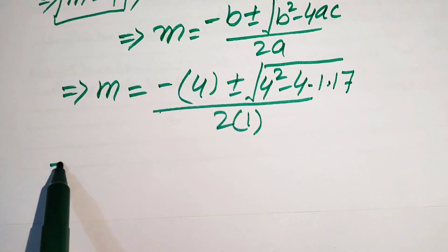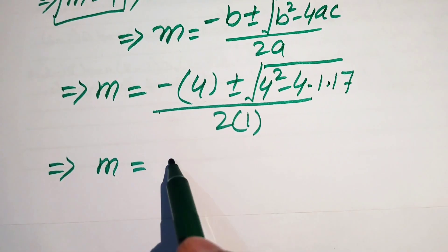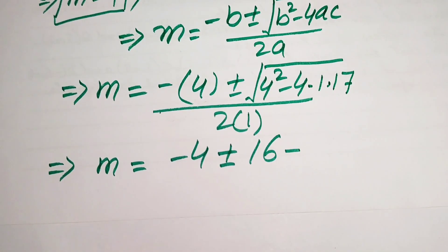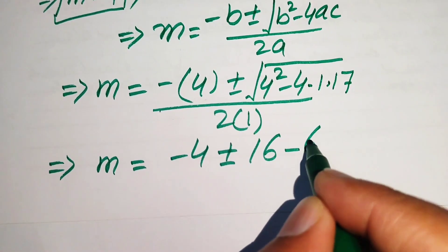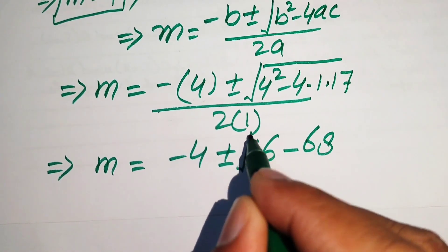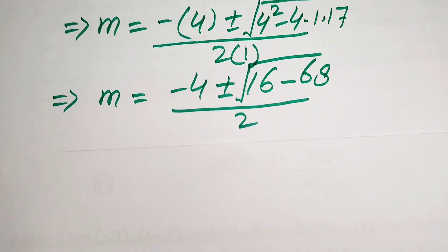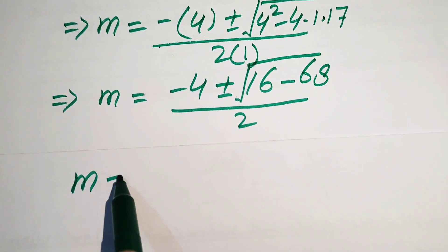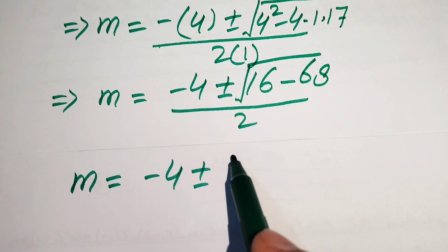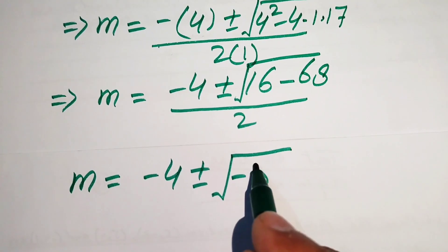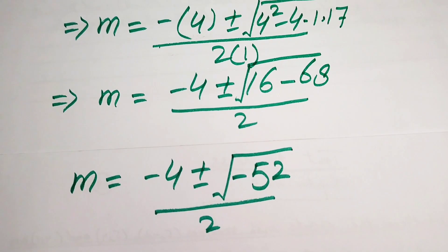Simplifying inside the square root: 4² = 16, and 4 × 17 = 68, so we have 16 - 68 = -52. The denominator is 2 × 1 = 2. Our expression becomes m = (-4 ± √(-52)) / 2.